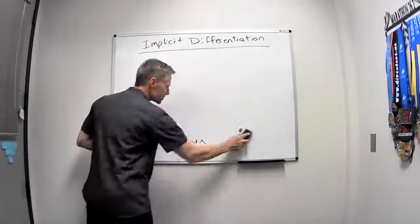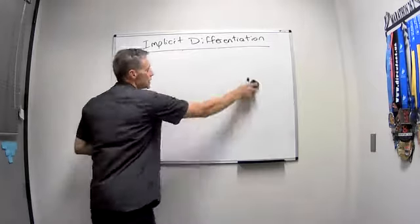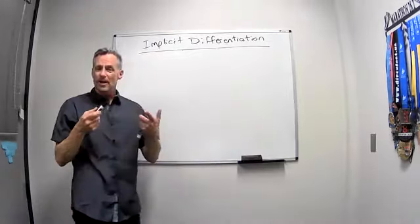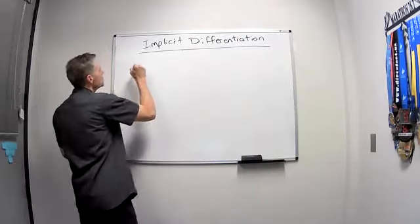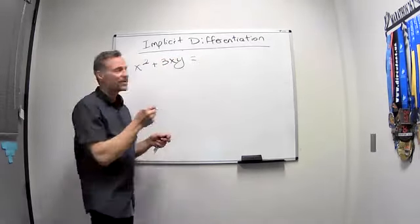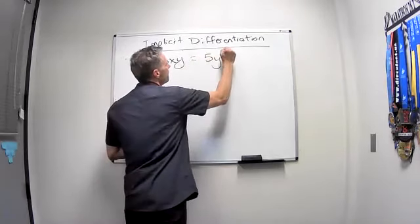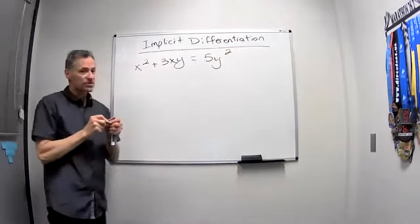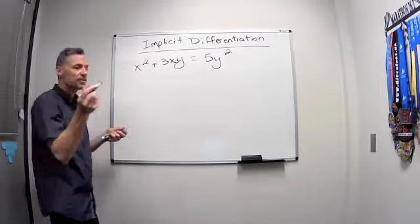All right. So let's look at this one. And we're going to put x squared plus 3xy and we'll have it equal to 5y squared. Okay. Approach it the same way. Take the derivative of both sides with respect to x.